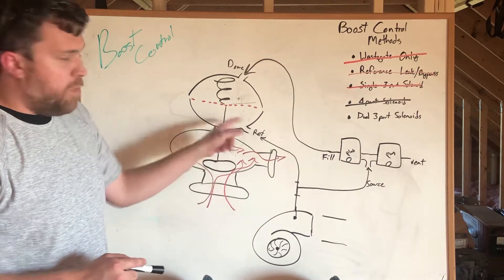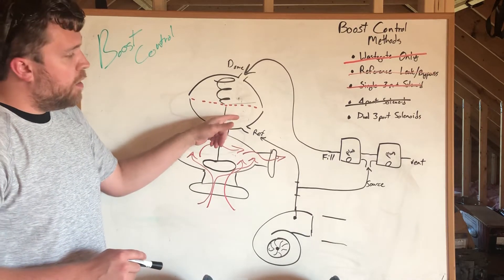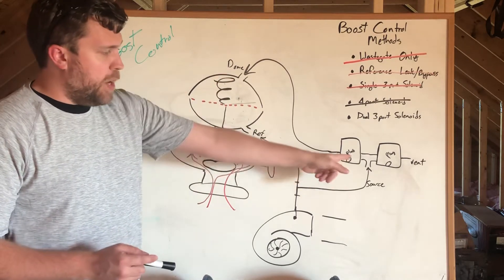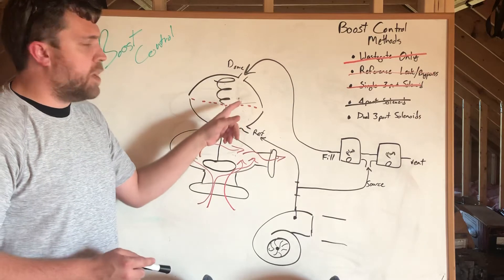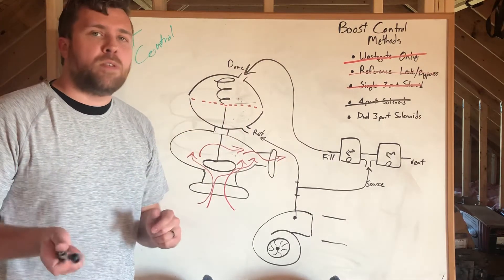We've got our reference line that's always putting whatever boost is coming out of the turbo into the reference out of the gate. And then as we want to add dome pressure we open the fill solenoid and it'll put a certain amount in based on duty cycle. And then we say oh that's a little more boost than I wanted.